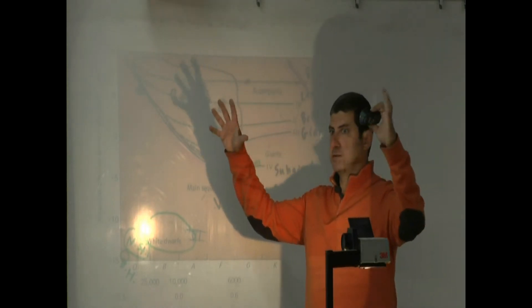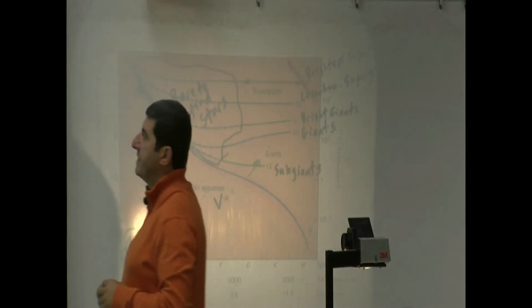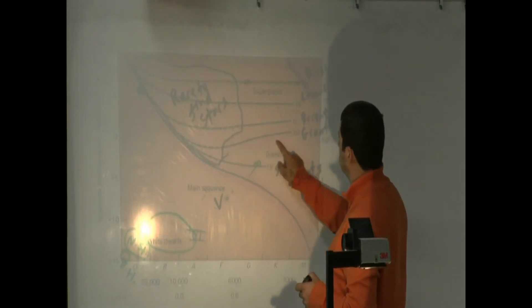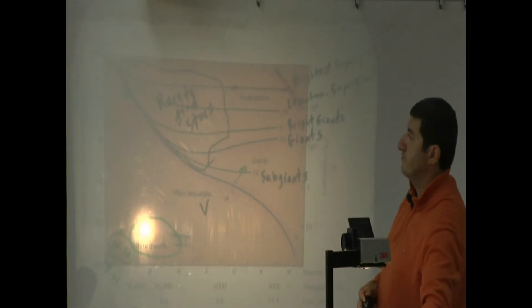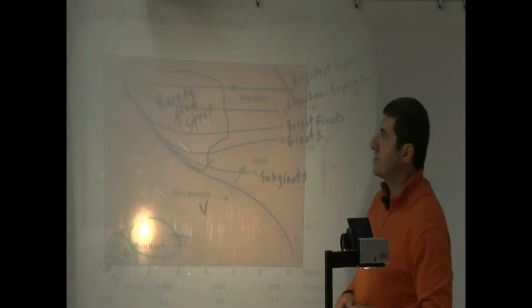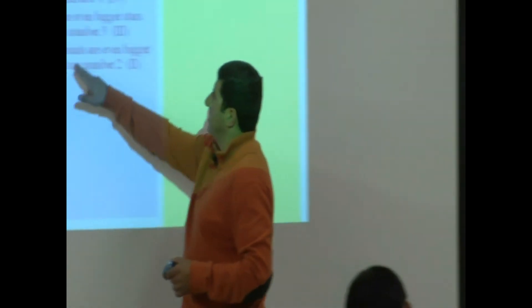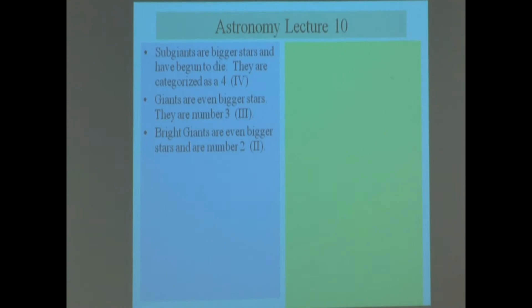Giants are even bigger stars and are number III. These ones are giants and they're brighter. Over there they are Roman numeral III. That would be right around here—Roman numeral III giants would be here.